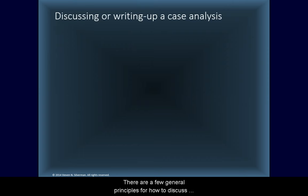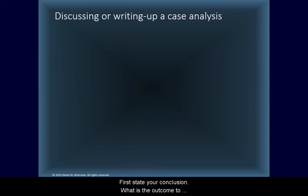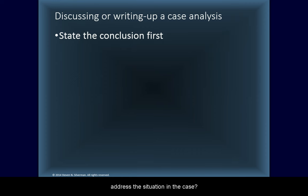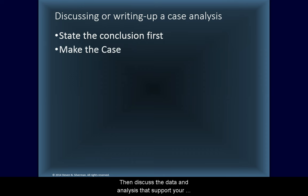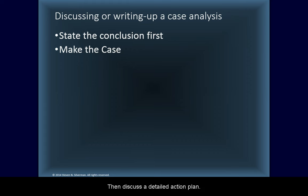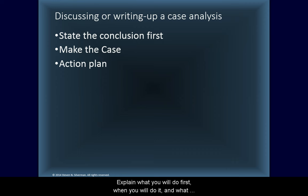There are a few general principles for how to discuss or write up a case analysis. First, state your conclusion — what is the outcome to address the situation in the case? Then discuss the data and analysis that support your conclusion. Build a story from the data to make the case. Then discuss a detailed action plan: explain what you will do first, when you will do it, and what the outcomes are expected to be.